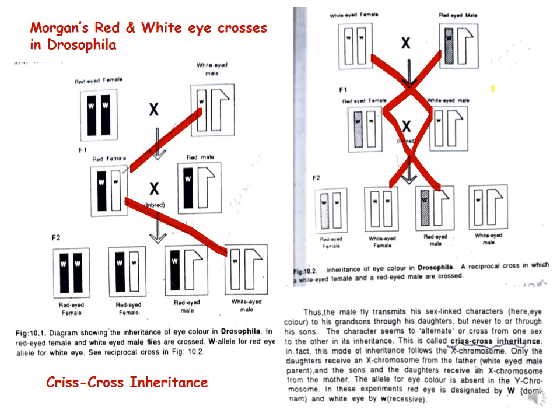In the reciprocal cross, the W allele goes from the male parent to the daughter in F1 and comes back to the son in the next generation. Similarly, the w allele goes from the female to the son in F1 and comes back to the female in the next generation.